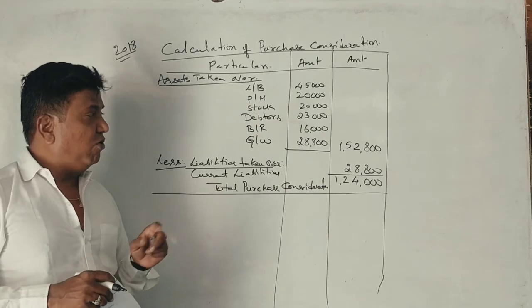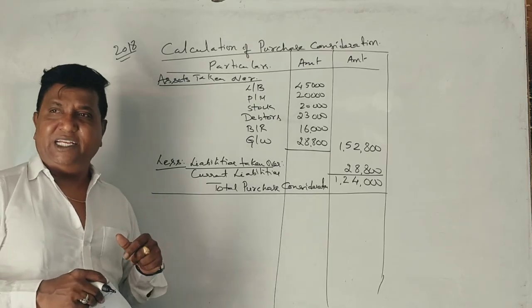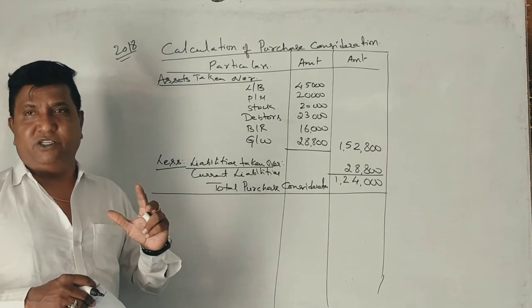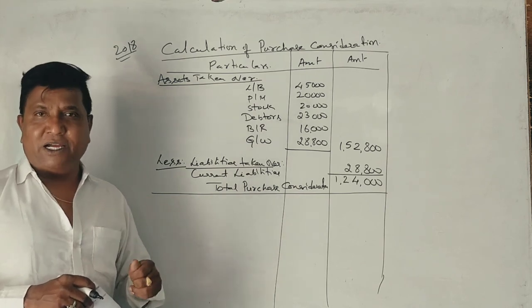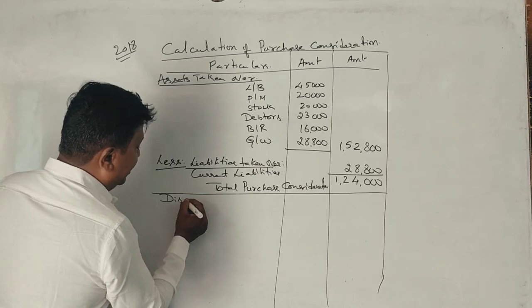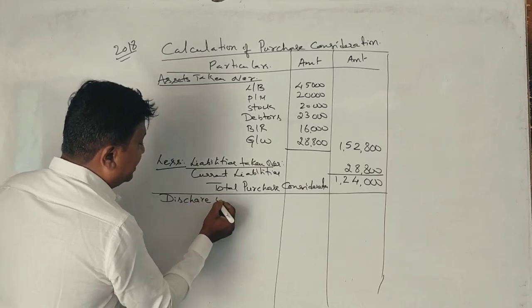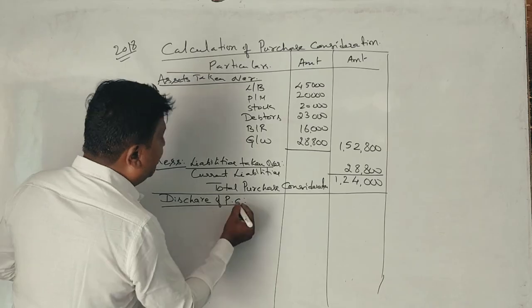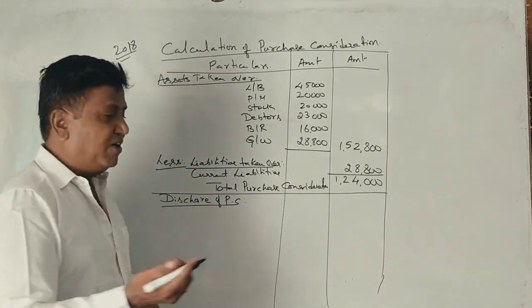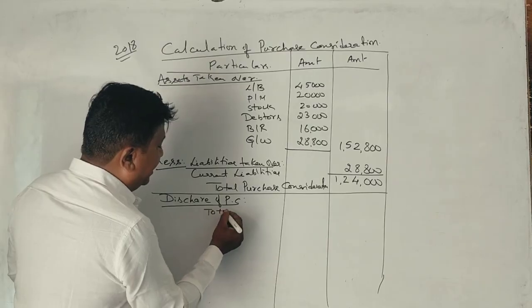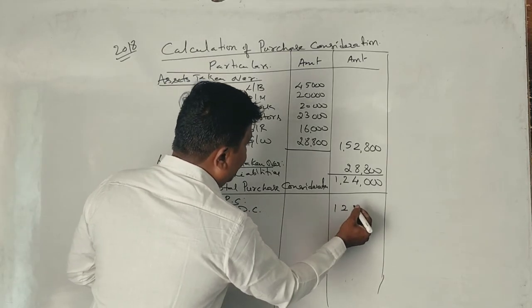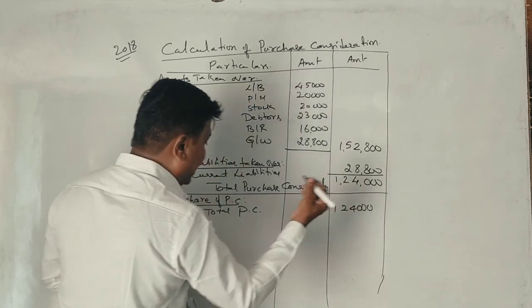Now, if you are not paying full cash, you will pay partly in shares and partly in cash. This is the discharge of PC, payment of PC. First, total PC what do you get? 1,24,000.